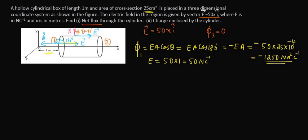Now let us calculate the electric flux on the second surface. Phi 2 = E times A times cos theta. Here the electric field is normal to the surface in the positive x direction and the area vector is also in the same direction — they are parallel to each other. So theta = 0 degrees, and the flux is simply E times A.